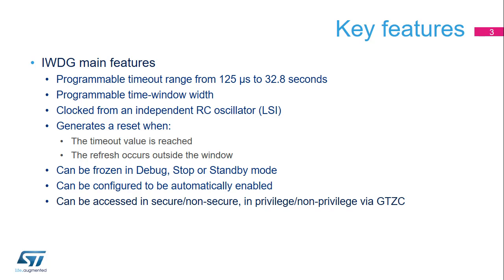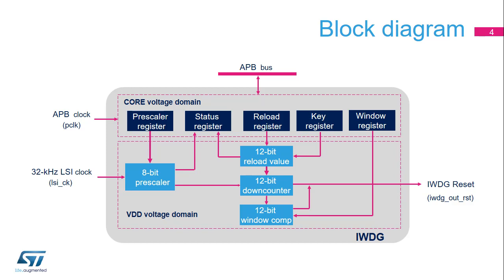It is possible to automatically enable the Independent Watchdog after a system reset. It is possible to define the behavior of the Independent Watchdog in debug, stop, or standby mode. It is also possible, thanks to GTZC, to set the access properties to secure and non-secure, in privilege and non-privilege. The Independent Watchdog registers are located in the core voltage domain, while its functions are in the VDD voltage domain.